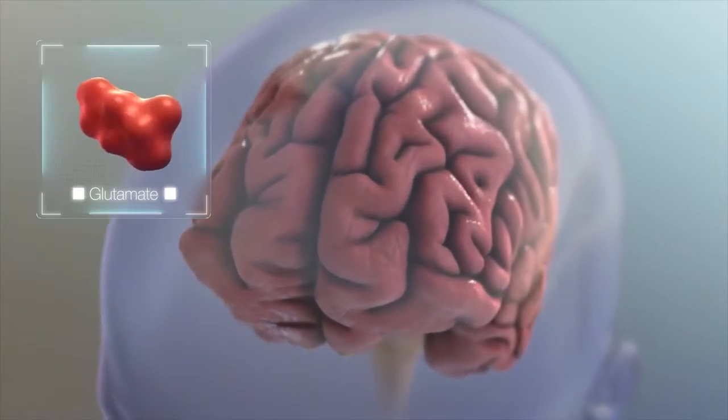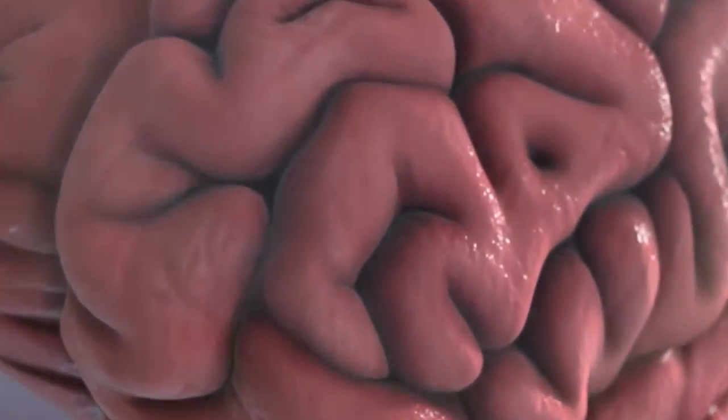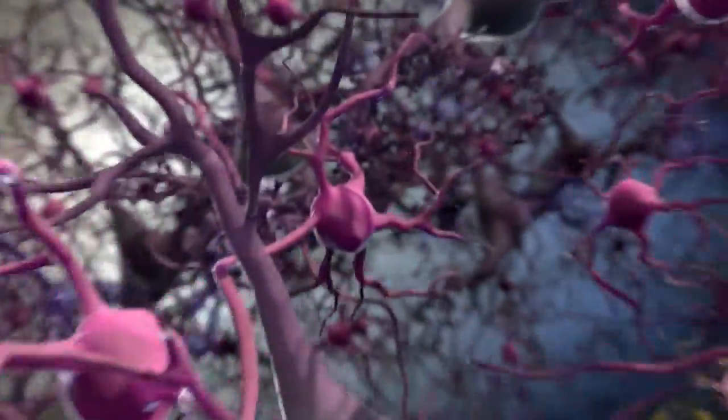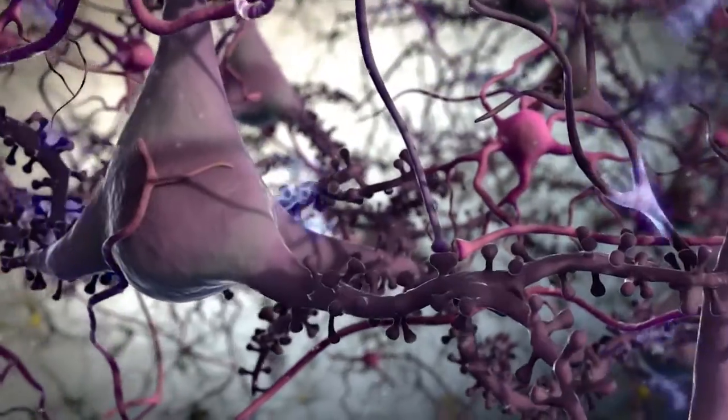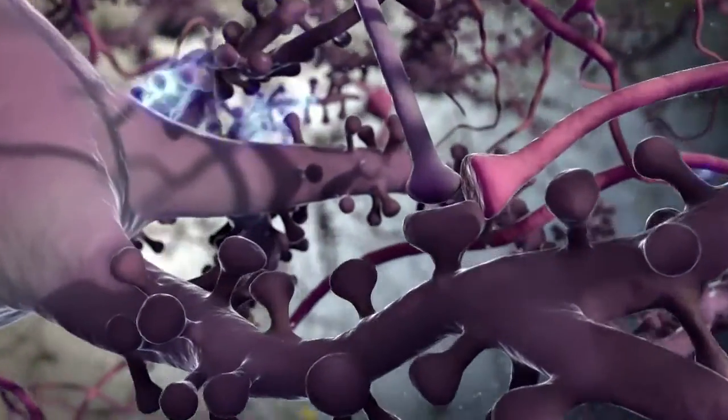Glutamate is the most abundant excitatory neurotransmitter in the brain. Release of glutamate is essential for normal function of neurons, but the levels of this neurotransmitter must be tightly regulated to avoid toxic effects on neurons.